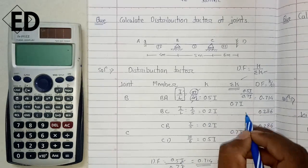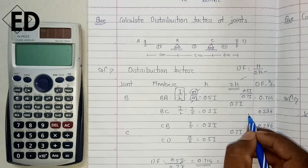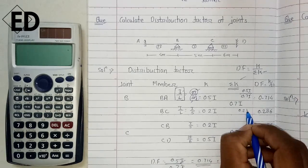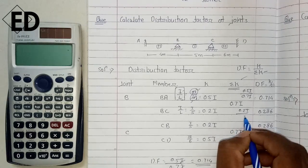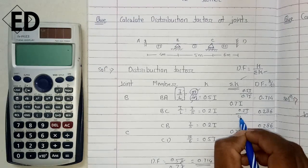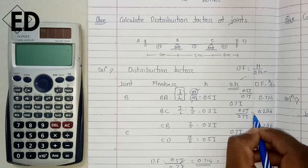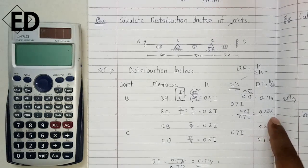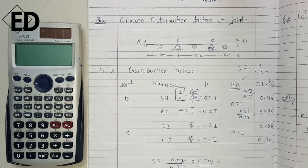For beam BC, the distribution factor is the ratio of its rotational stiffness to the sum of rotational stiffness at joint B. The rotational stiffness for BC is 0.2I and the sum is 0.7I. Dividing these gives 0.286, which is the distribution factor for beam BC.